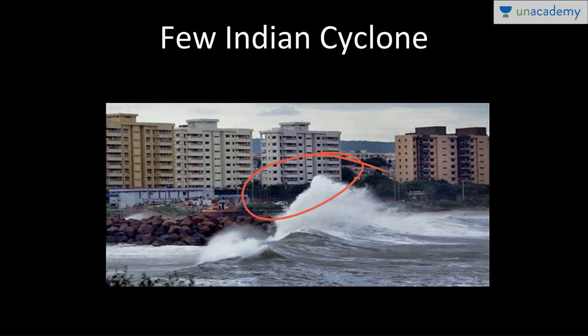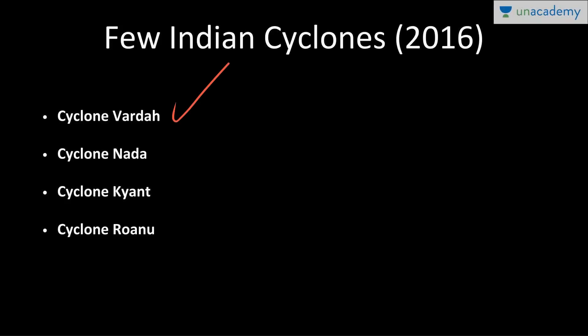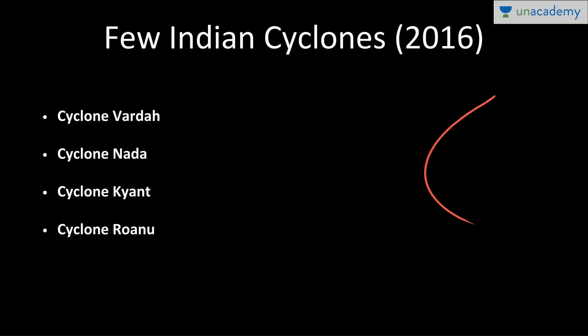Notable Indian cyclones include Hudhud, which hit Visakhapatnam in 2014; Vardha, which struck Chennai with thousands evacuated in Tamil Nadu and Andhra Pradesh; Nada in the Bay of Bengal affecting Tamil Nadu and Kerala; and Kyant in October 2016 in the east-central Bay of Bengal, bringing strong winds over Odisha and Andhra Pradesh coasts. Cyclone Roonu originated south of Sri Lanka, intensified, moved toward Bangladesh in May 2016, killing 200 people, with heavy rainfall across Tamil Nadu, Andhra Pradesh, Kerala, and Odisha.